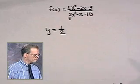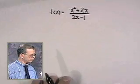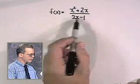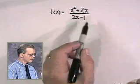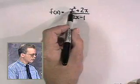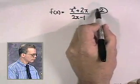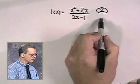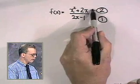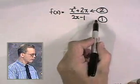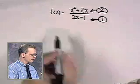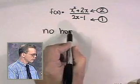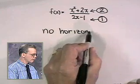Let's take a look at another example. Here's f of x equals x squared plus 2x over 2x minus 1. The degree of the numerator is 2 and the degree of the denominator is 1. Since the degree of the numerator is higher than the degree of the denominator, there is no horizontal asymptote on the graph of this function.